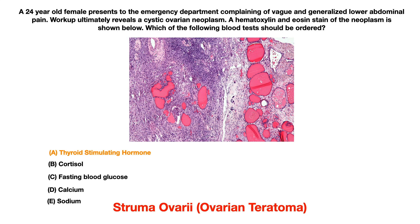Recall that a teratoma is made up of various types of tissue. In this instance, if one of the types of tissue contained therein is thyroid tissue, then this is called struma ovariae. The presentation on your exam, as this vignette shows you, is going to start with lower abdominal pain and the generalized vague symptoms of an ovarian neoplasm.